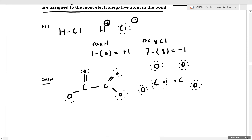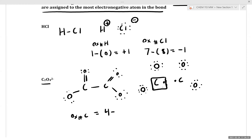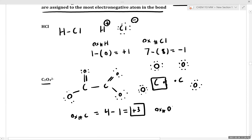We've taken all of our bonding electrons and assigned them to the most electronegative atom. For the oxidation number of carbon, carbon has a group number of four. With one electron under this oxidation number counting model, the oxidation number would be plus three. For oxygen with a group number of six and currently eight electrons, that gives us an oxidation number of minus two.